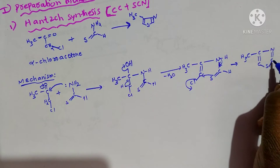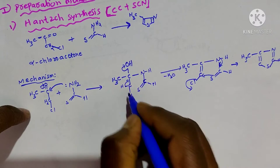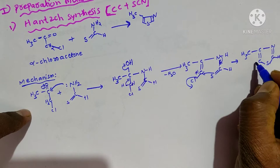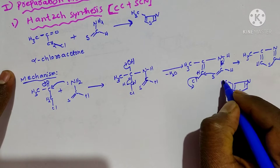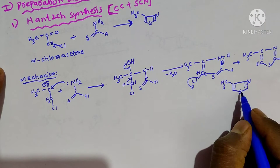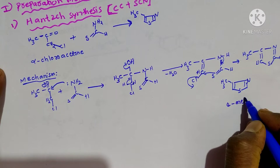Here we have an H — we forgot to write one more H — so we get 1H and 1H. This is the thiazole derivative. Counting 1, 2, 3, 4 — so this is 4-methyl thiazole.